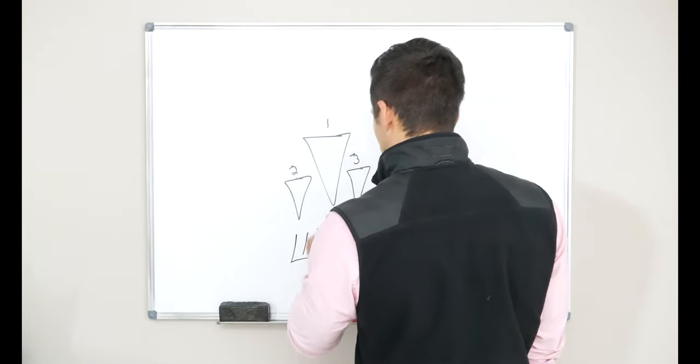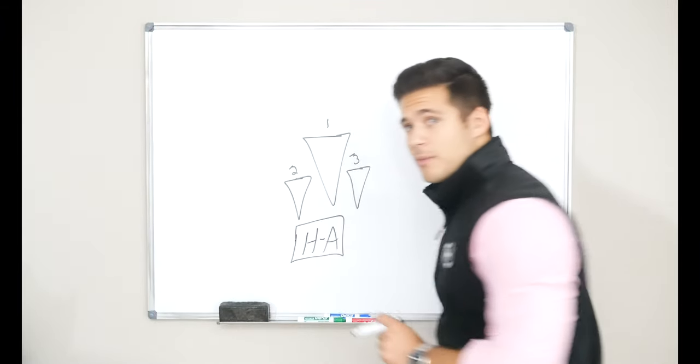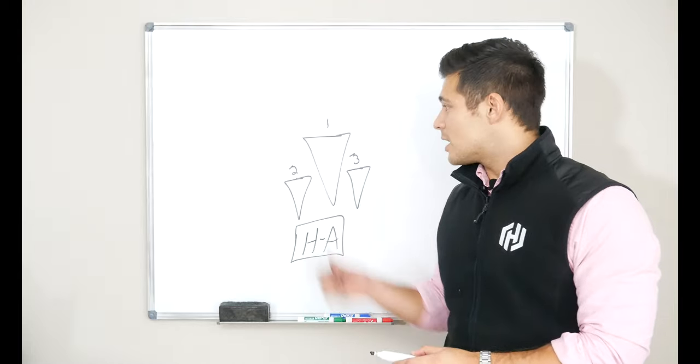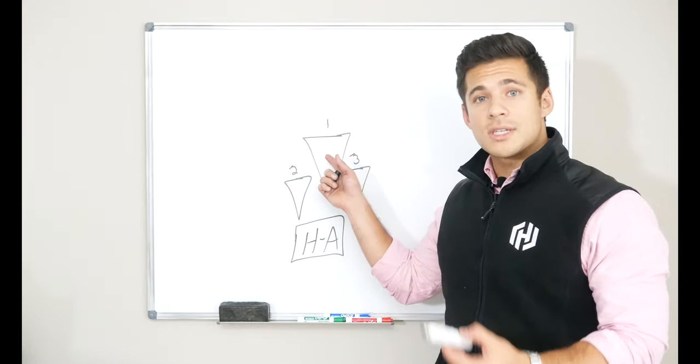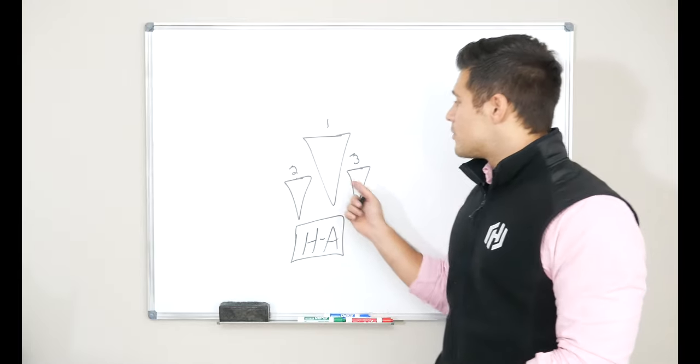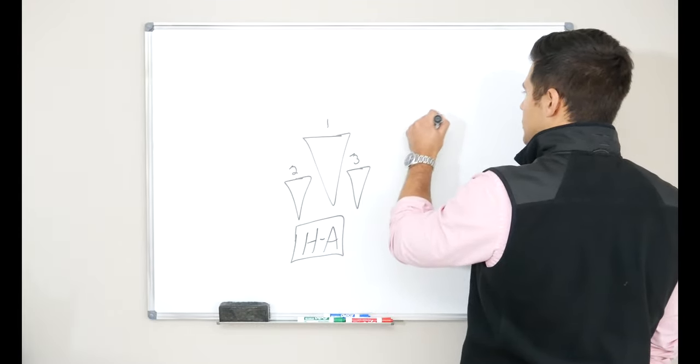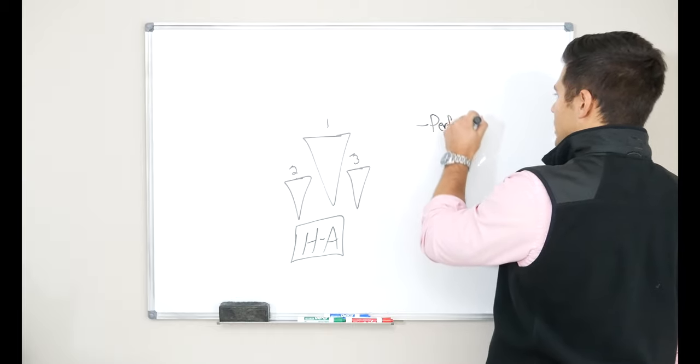When we deploy Vault, we deploy it in a three-node cluster. The reason for this is so that we have a highly available state, meaning if we lose node number one, which in this example is the primary node, we have two other nodes here to take the traffic. The other reason is so that you can enable things like performance standbys.